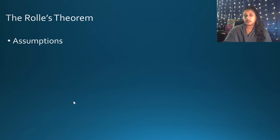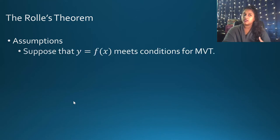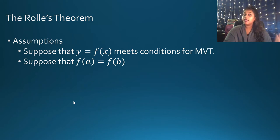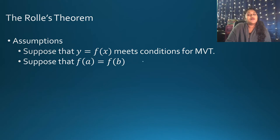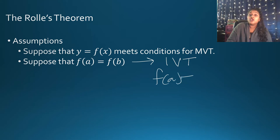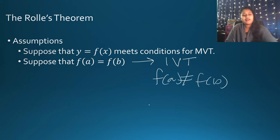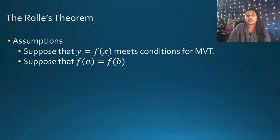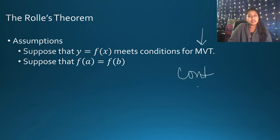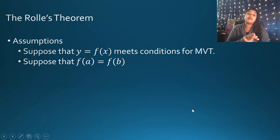We have a specialty theorem within the Mean Value Theorem — Rolle's Theorem. This supposes that we meet all the conditions of the MVT, but F(A) is equal to F(B). You've seen something similar with the Intermediate Value Theorem, but instead of them equaling, they could not equal each other. So if you ever have an F(A) and F(B) that do equal each other, check if it meets the conditions of the MVT: continuous on a closed interval and differentiable.